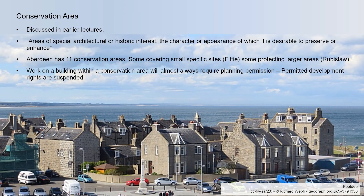A more local way of protecting works is by using conservation areas, which we discussed in a previous lecture series. These are primarily local protection areas where we're looking for special architectural or historic interest — collections of houses or streets built in a certain way, or areas where a historic activity happened which is worth protecting. We're really trying to preserve the character of that area. Aberdeen has 11 conservation areas.